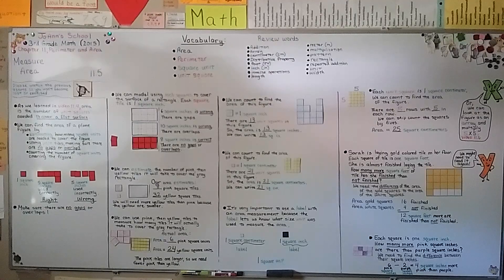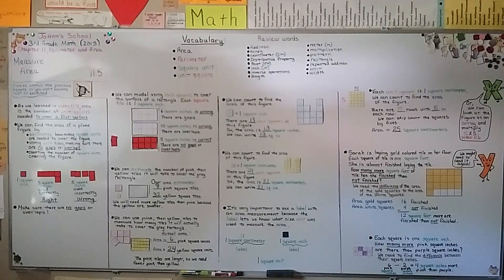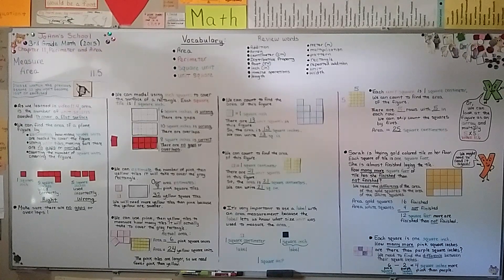We can look at figures as arrays and use multiplication — we'll cover that in our next lesson, 11.6. Remember: no gaps, no overlaps when working with square units. Have a wonderful day. See you next time — hit that like button, it helps me on YouTube. Bye!